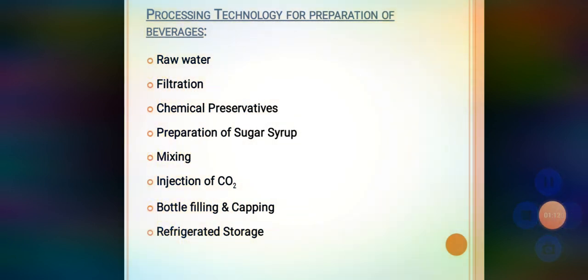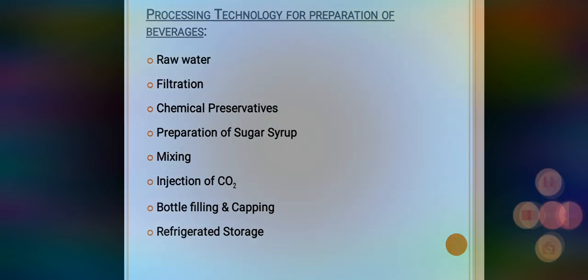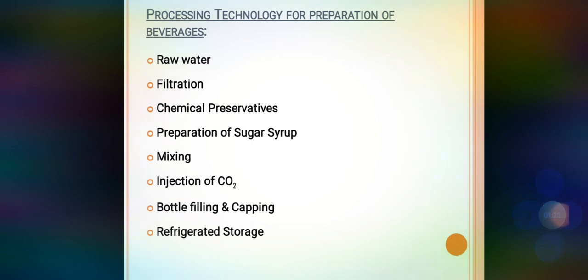For the preparation of any type of beverage, the basic steps are: first, raw water; second, filtration; third, chemical preservatives; fourth, preparation of sugar syrup; fifth, mixing of ingredients; sixth, injection of carbon dioxide; seventh, bottle filling and capping; and finally, refrigerated storage. We'll go through each one.